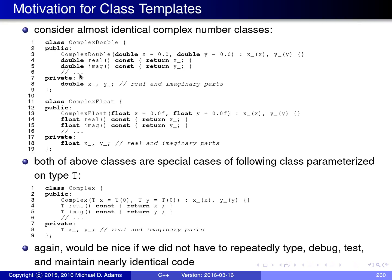At some point later, we decide that we'd also like to represent complex numbers using float for the real and imaginary parts. So we have to copy all the code we just wrote, duplicate it all, and change all the doubles into floats. And then later on, we decide we'd also like a version using long double, perhaps for applications needing very accurate number representations. This causes a lot of problems because we get all this duplication of code where the code is almost identical — just a few type names are changed here and there.